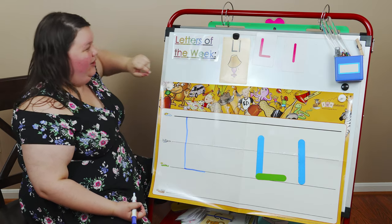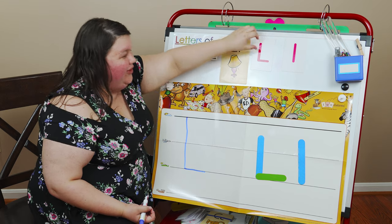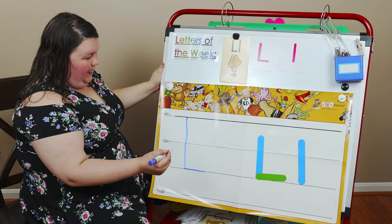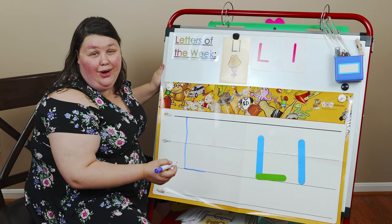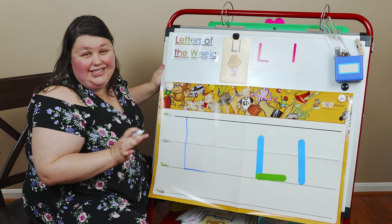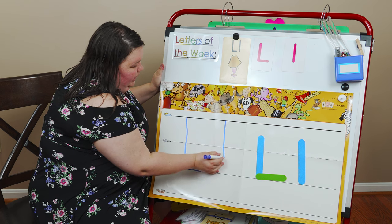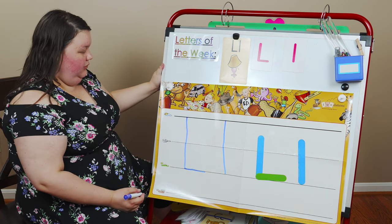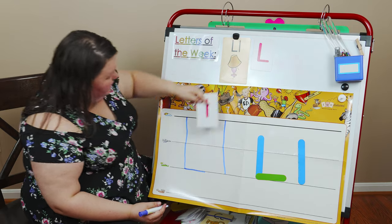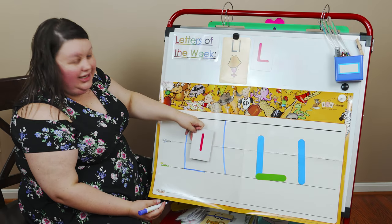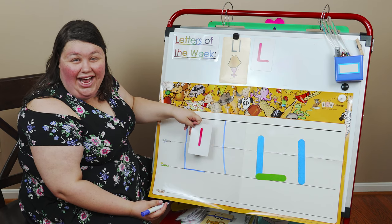Let's do our lowercase one now. That one we only need one line for, so it should be super simple. Let's go down from the sun line and stop at the grass line, because this is not a basement letter — not an in-the-ground, in-the-dirt kind of letter. We're done. The lowercase L is just a line straight down. Great job, my friends.